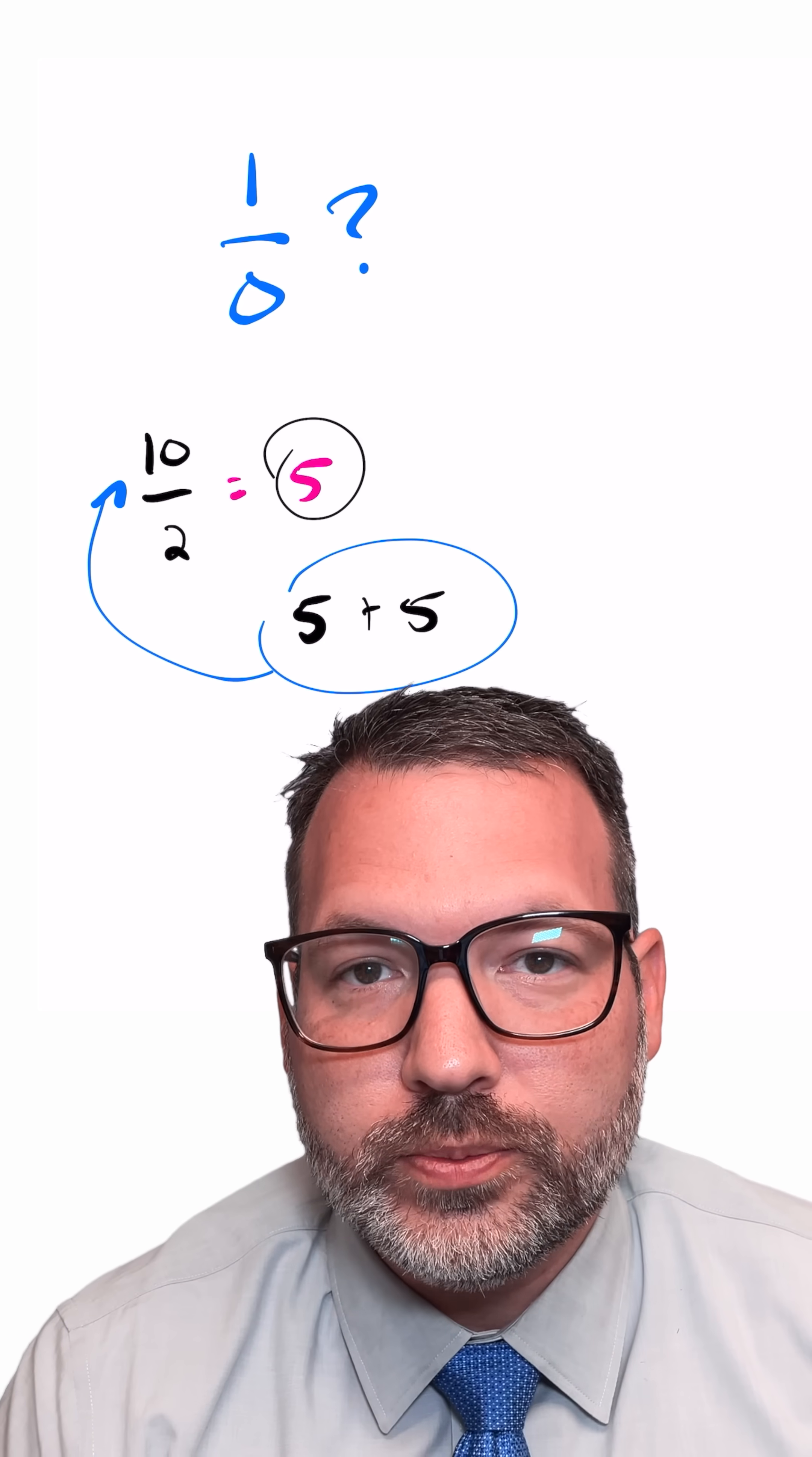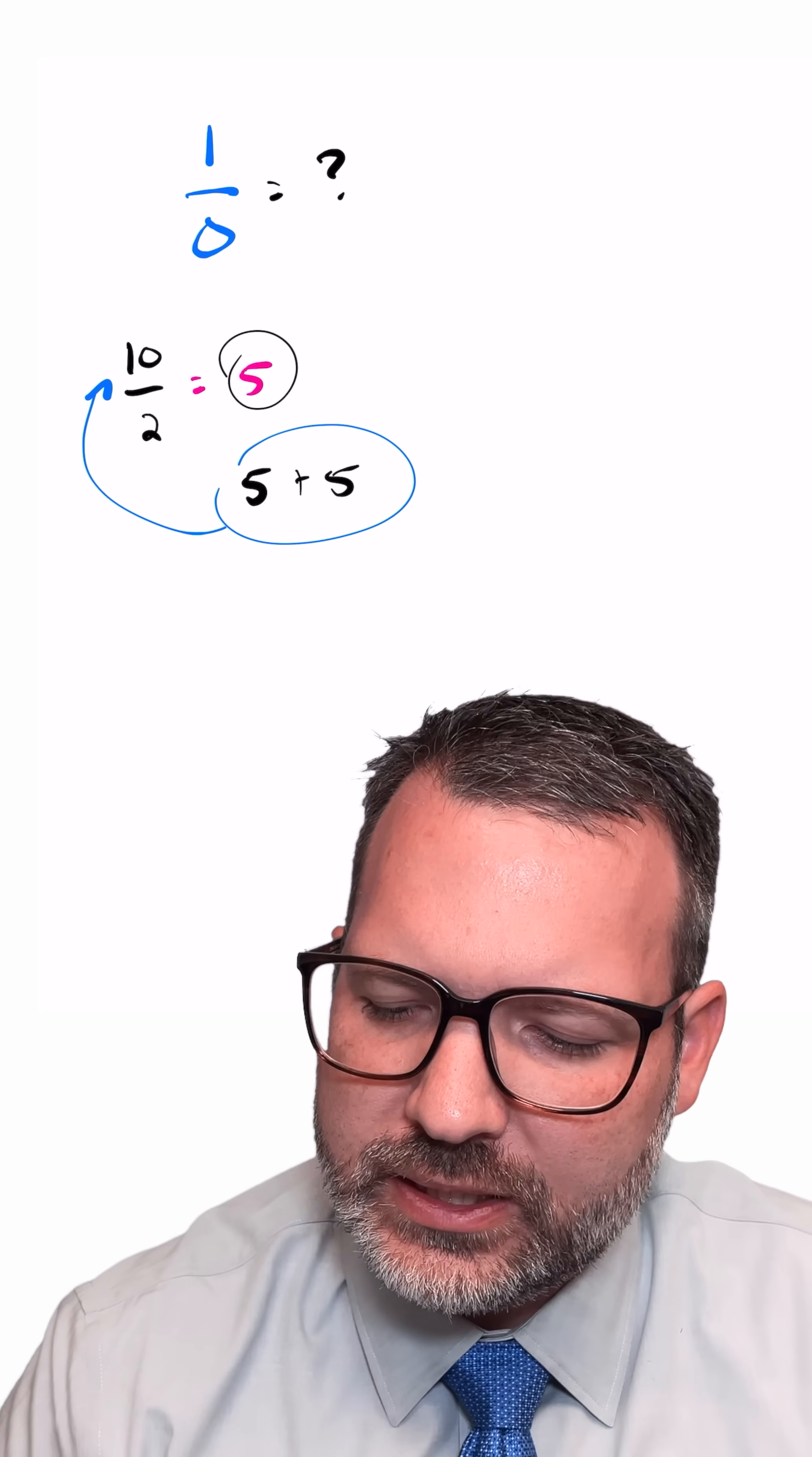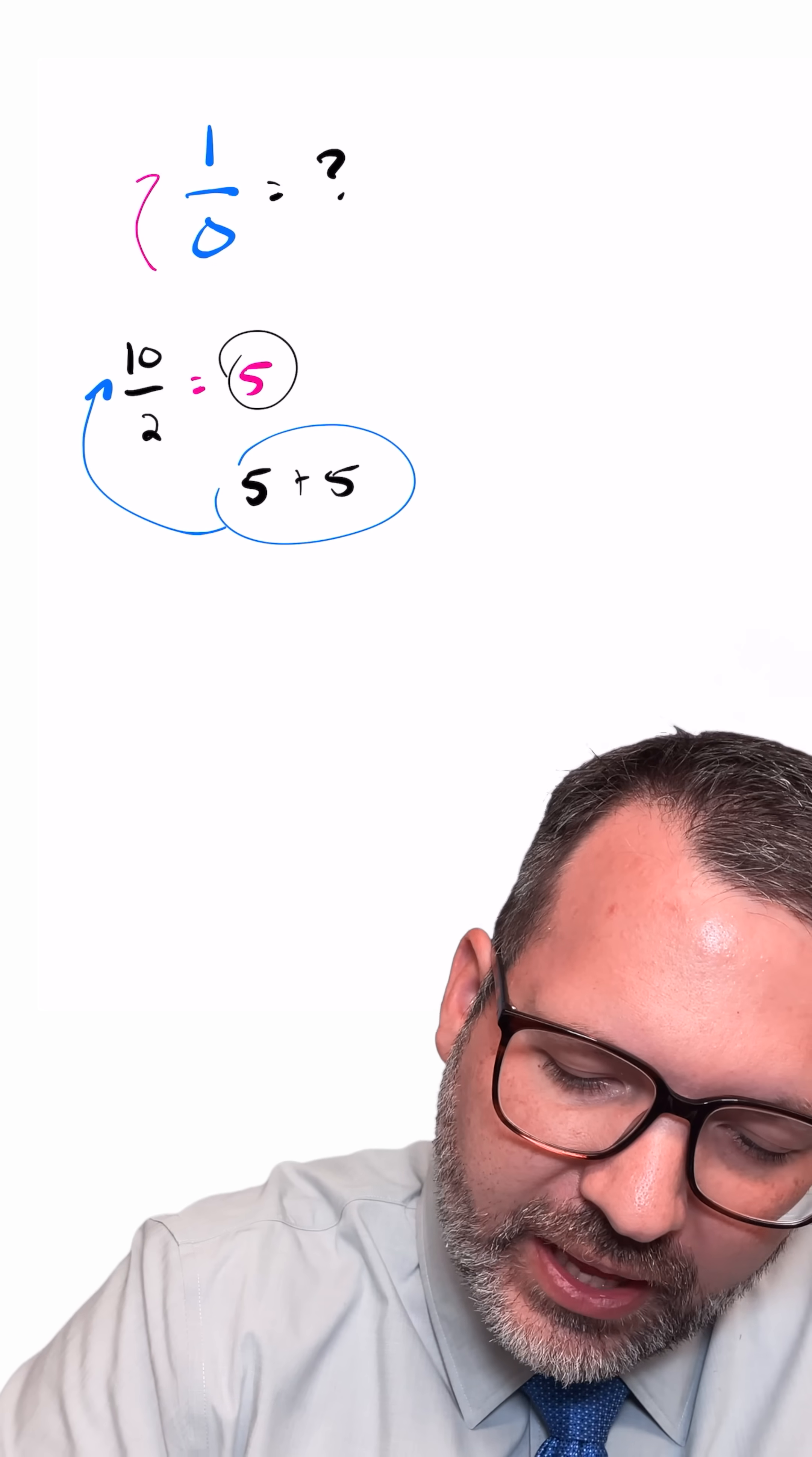The problem with using this logic for 1 divided by zero is, how many zeros does it take to add back to the original dividend of 1?